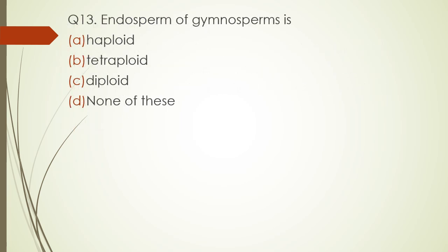Question number thirteen. Endosperm of gymnosperms is: haploid, tetraploid, diploid, or none of these? The correct answer is option A — haploid.